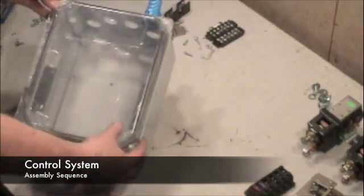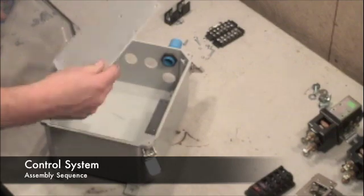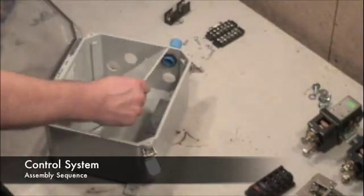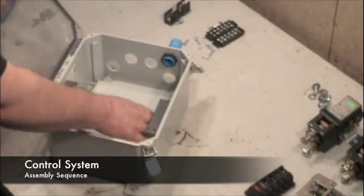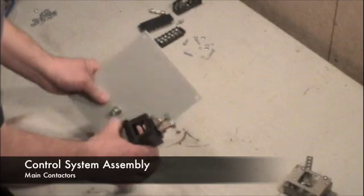This session demonstrates assembly of the non-metallic control circuit enclosure box. The unit has a fiberglass backplane board that we'll use to assemble the Curtis Albright contactors. We'll begin with the backplane contactor assembly.